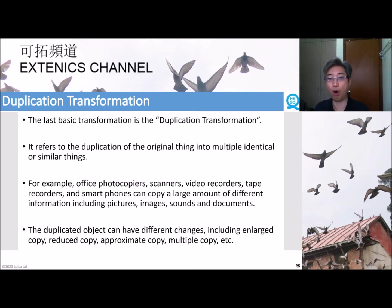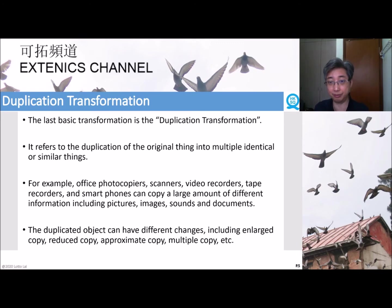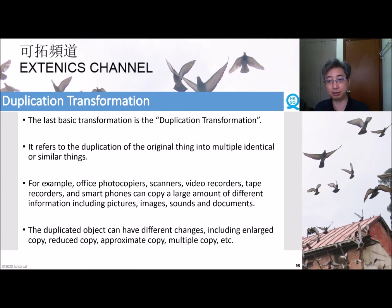For example, office photocopiers, scanners, video recorders, chip recorders, and smartphones can copy a large amount of different information, including pictures, images, signs, and documents. The duplicated object can have different changes, for example enlarged copy, reduced copy, approximate copy, and multiple copy, etc.